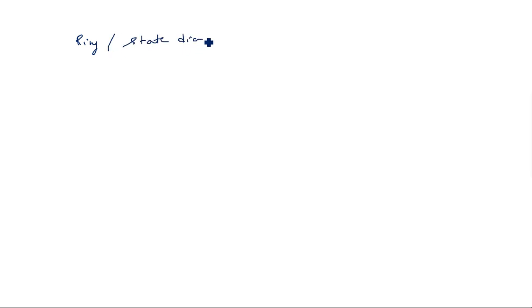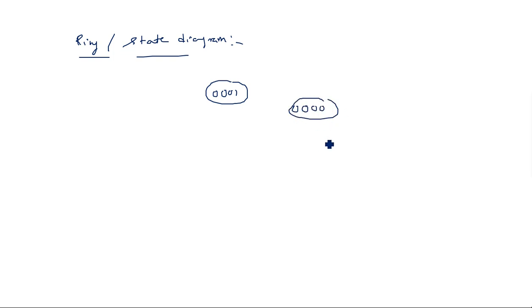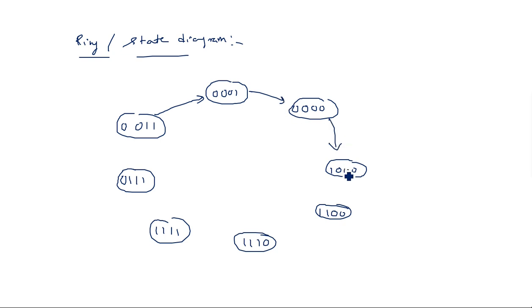Looking at the state diagram for the Johnson counter, it starts from 0, 0, 0, 0 and goes: 1, 0, 0, 0 → 1, 1, 0, 0 → 1, 1, 1, 0 → 1, 1, 1, 1 → 0, 1, 1, 1 → 0, 0, 1, 1 → 0, 0, 0, 1 → and back to 0, 0, 0, 0. That is the Johnson counter state diagram.